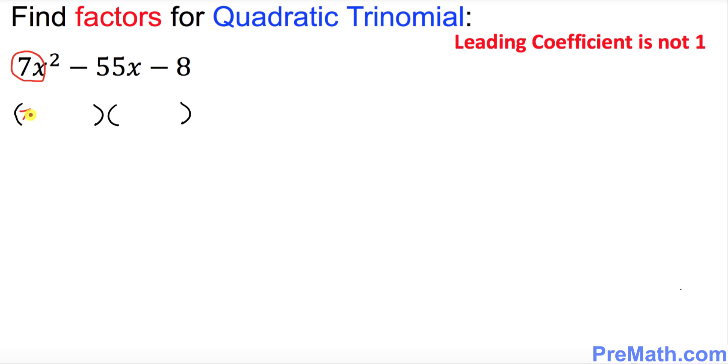I want you to put down 7x in the first parentheses. I want you to put down 7x in the second parentheses as well. Now the next step is I want you to multiply 7 at this end and negative 8 and multiply them out.